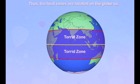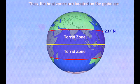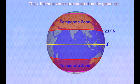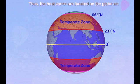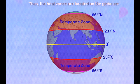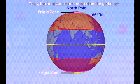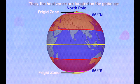The heat zones are located on the globe as follows in degrees: the torrid zone from 23.5° north to 0° to 23.5° south; the temperate zone from 23.5° north to 66.5° north; the north frigid zone from 66.5° north to the north pole; and the south frigid zone from 66.5° south to the south pole.